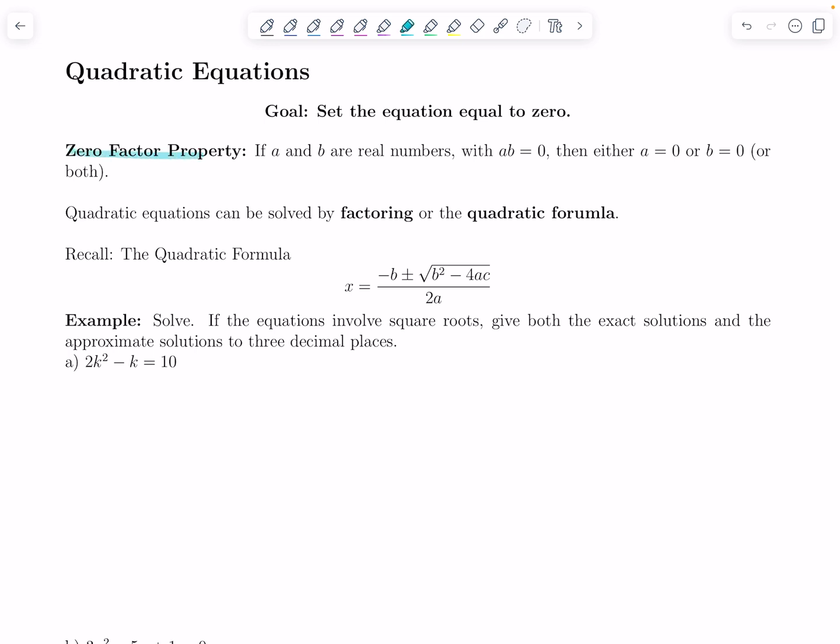If the quadratic equation factors, then we use the 0 factor or 0 product property, which tells me if you have a times b equaling 0, assuming a and b are real numbers, then either a is 0 or b is 0 or both are 0. If it doesn't factor on the left-hand side, your quadratic equation, then you're going to use a quadratic formula.